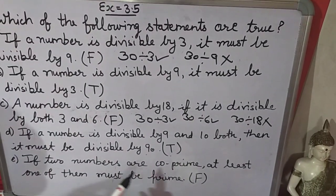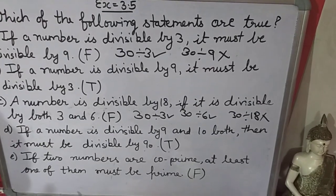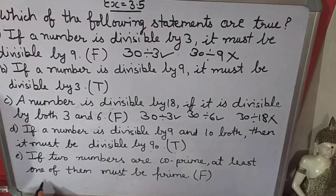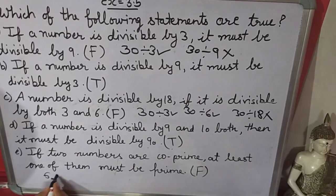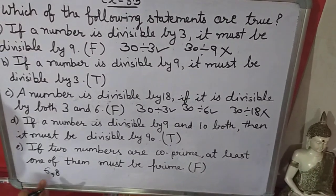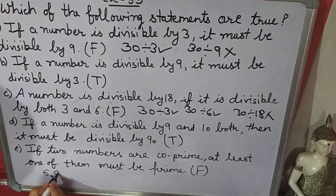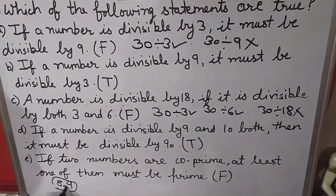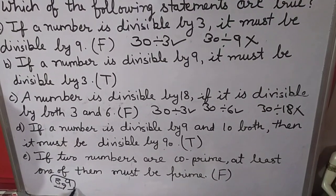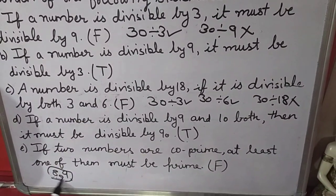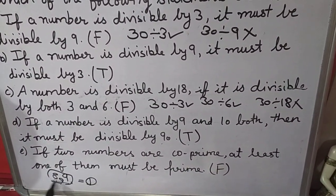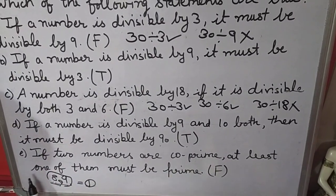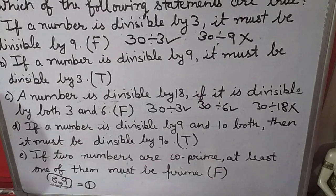Last — if two numbers are co-prime, at least one of them must be prime. No, it is not necessary. For example, take 8 and 9. Both are composite numbers and their common factor is 1, so they are co-prime. So this statement is false.